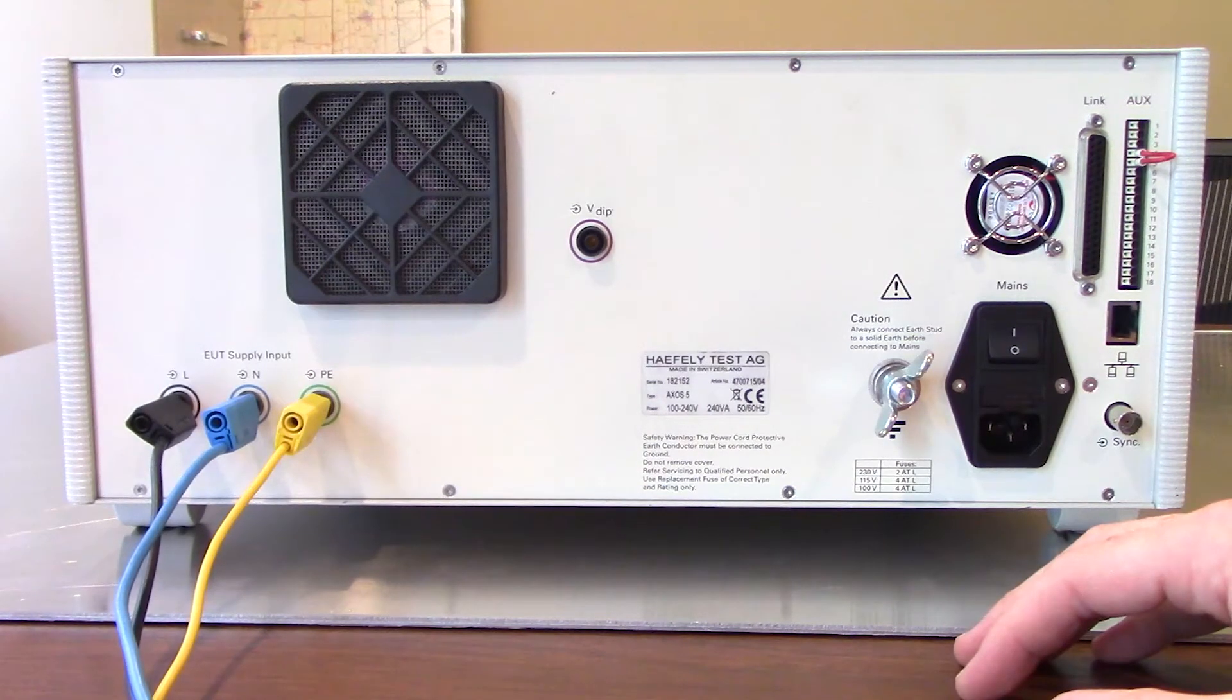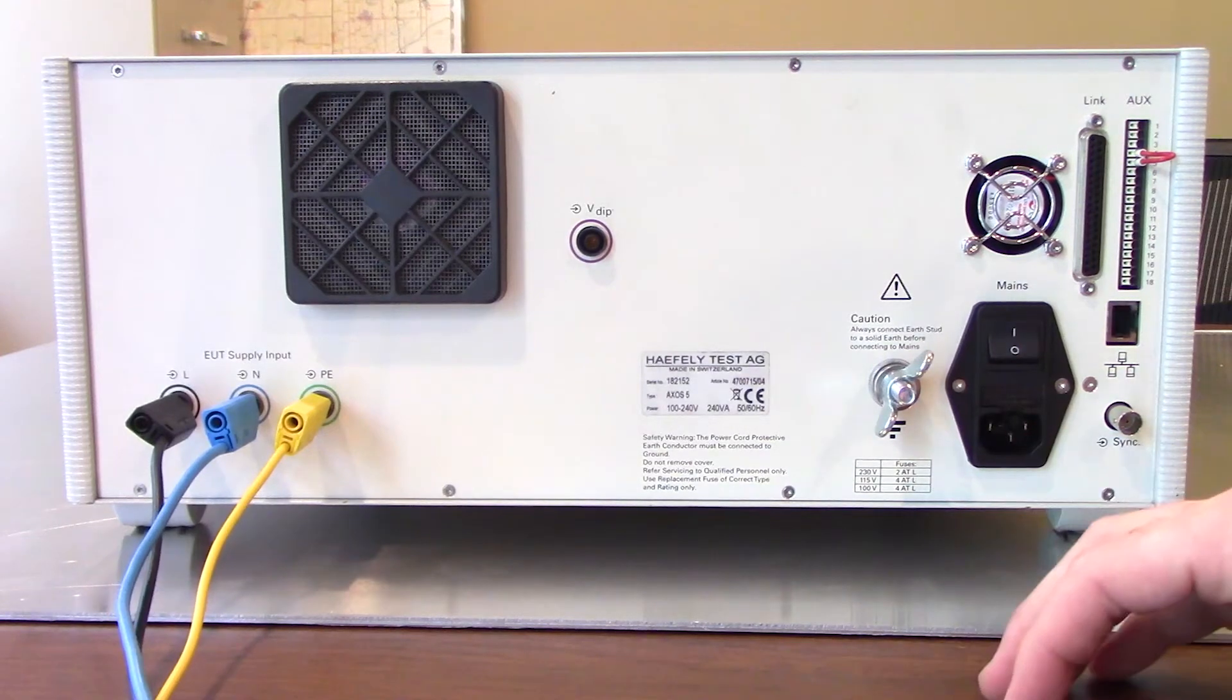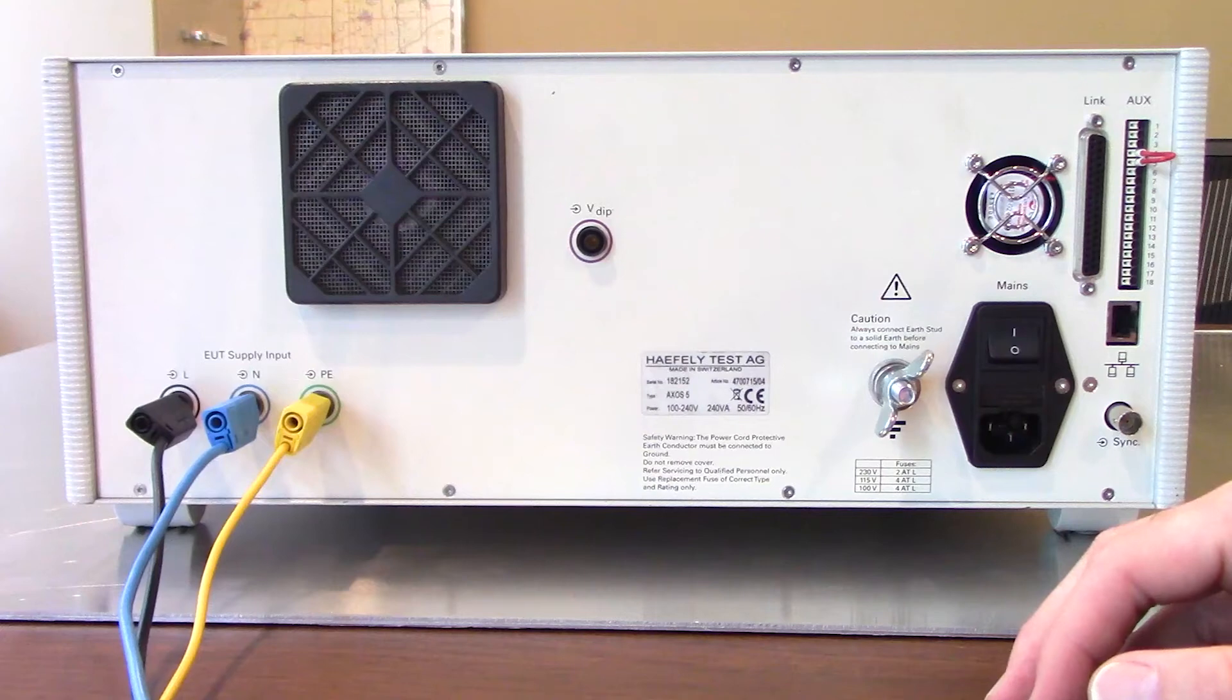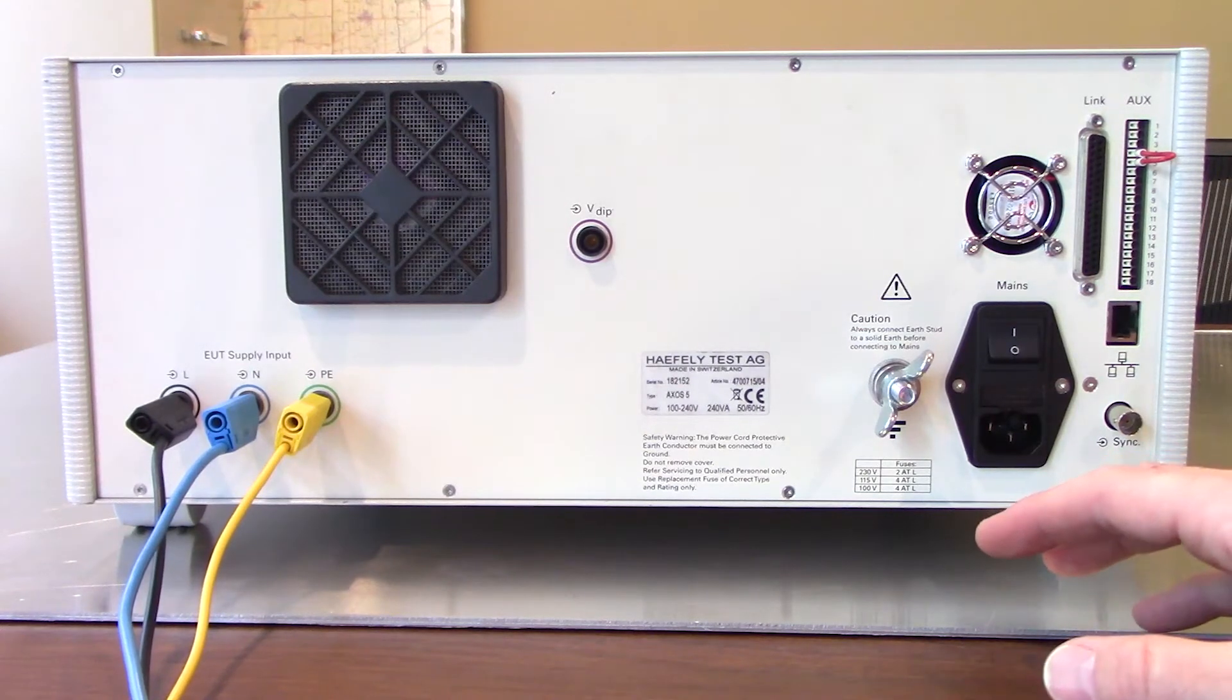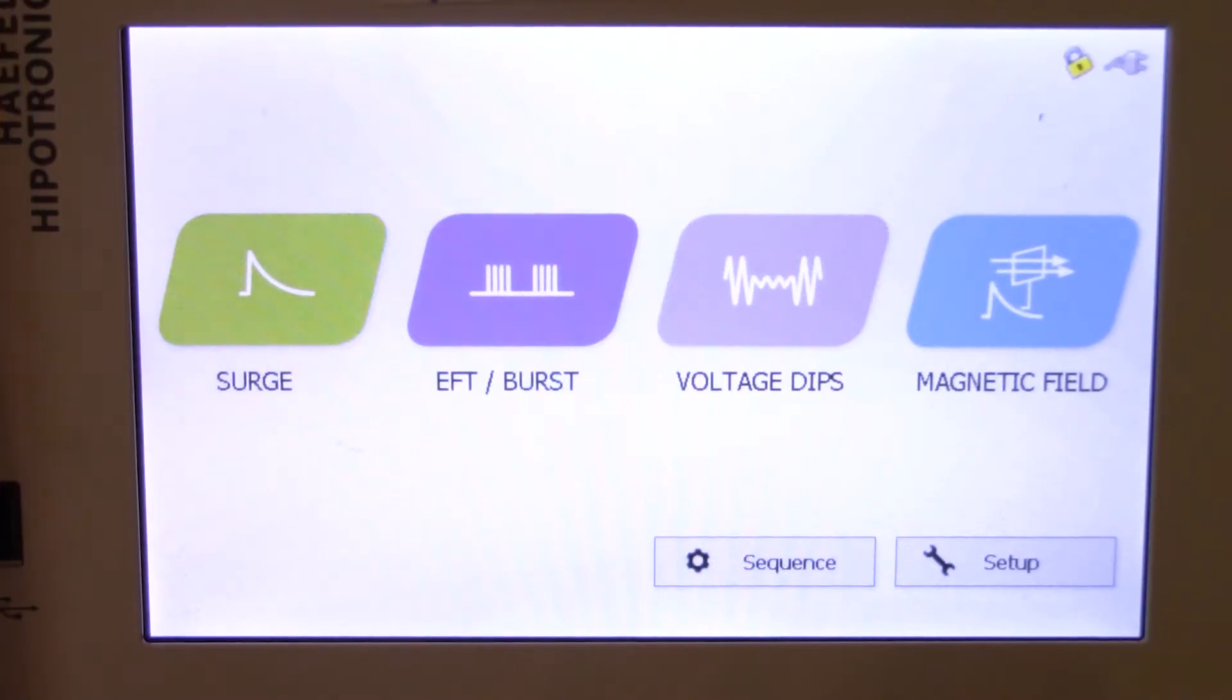Let's go ahead and turn it around. We'll get everything plugged in and ready to go. We'll start up the system, walk through some of the menus, show you how to turn the equipment under test power off and on, as well as modify some of the different testing parameters for IEC 61000-4-5.